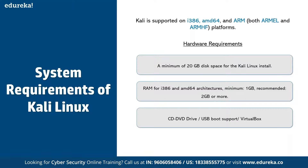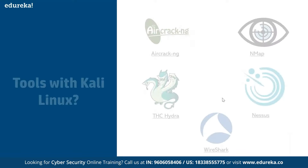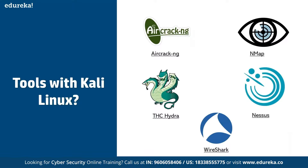The hardware requirements for Kali Linux are a minimum of 20 GB of disk space, minimum 1 GB RAM with 2 GB or more recommended. It can be installed on virtual software. Common tools include Wireshark, Nessus, Nmap, and Aircrack-ng, among many others available for ethical hacking.